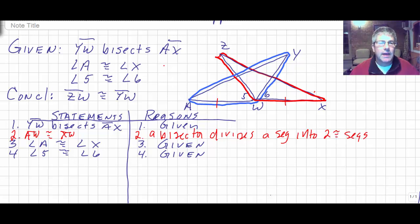Then we're given that angle A is congruent to angle X. So angle A is congruent to angle X. And we see here we have an angle and a side.